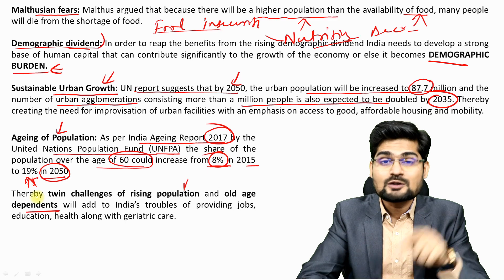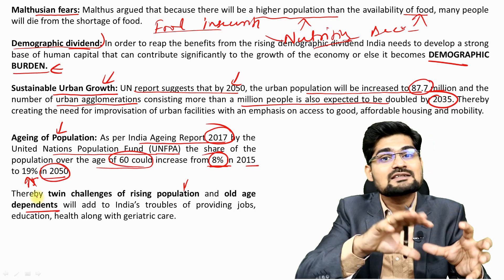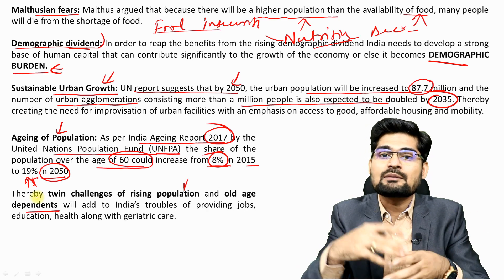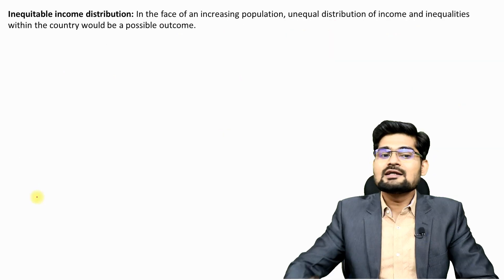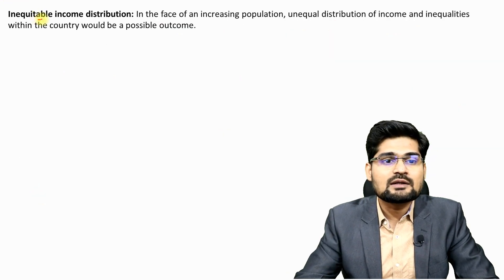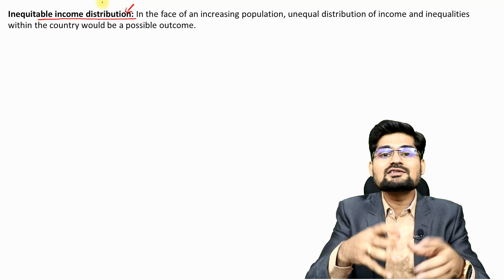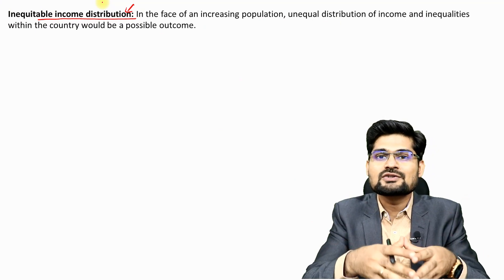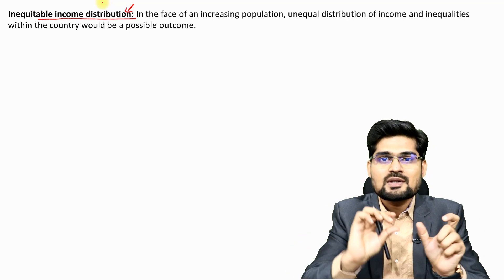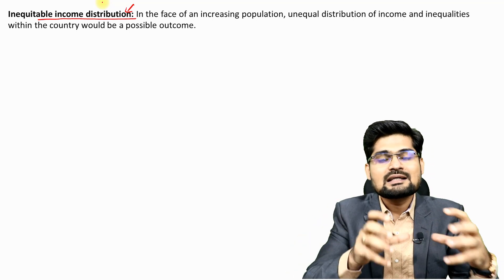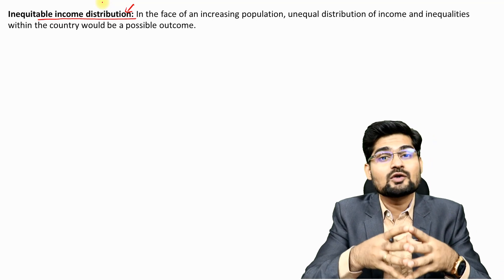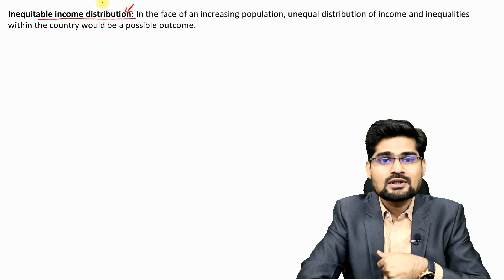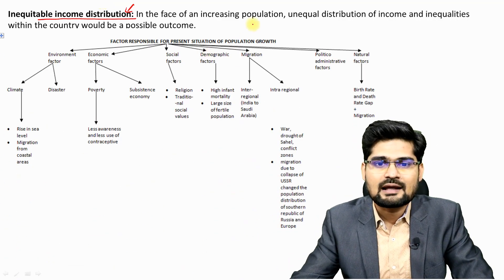Inequitable income distribution is another global challenge. The rise of world poverty — where a few become millionaires and billionaires while the rest grow poorer — means the rich get richer and the poor get poorer. This grim reality will intensify in the future if not addressed in the present.